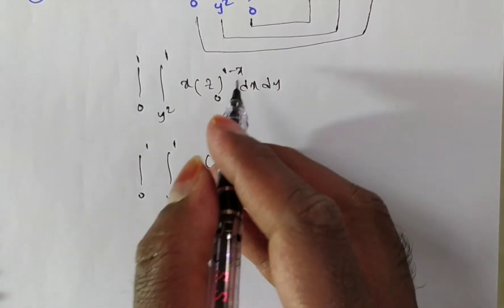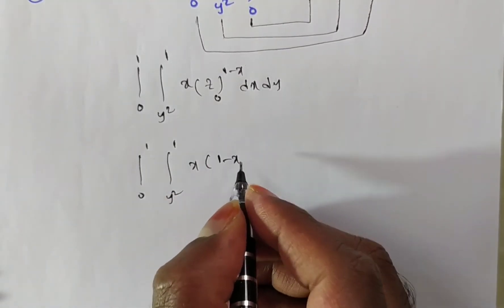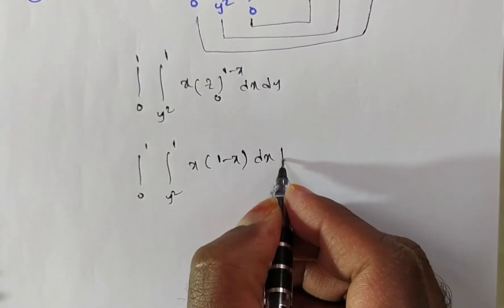Now integral 0 to 1, y square to 1, x into upper limit means 1 minus x, minus lower limit means 0. So no need to write, into dx dy.